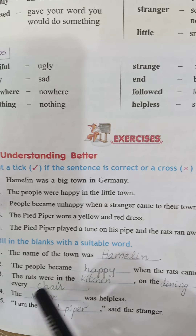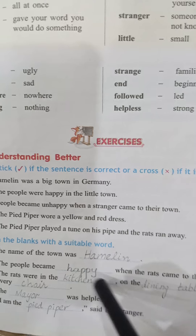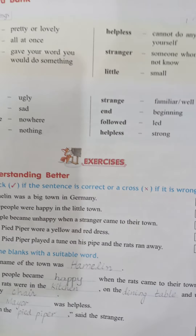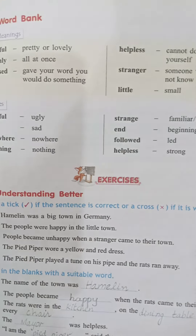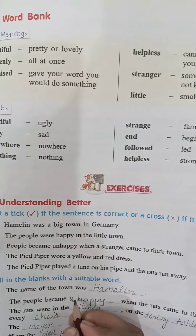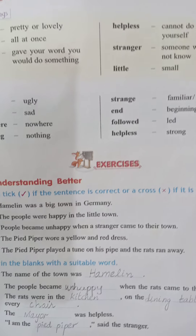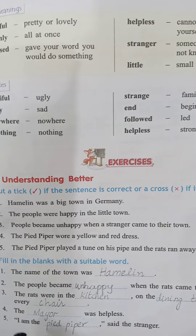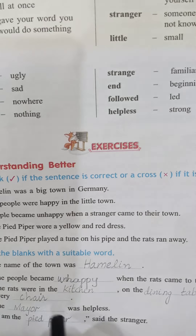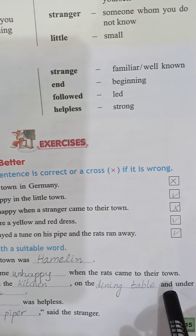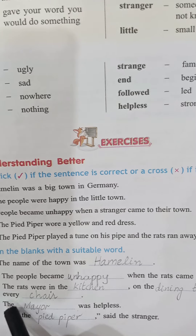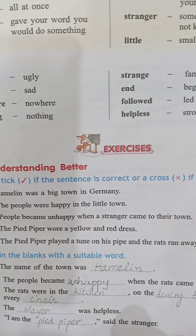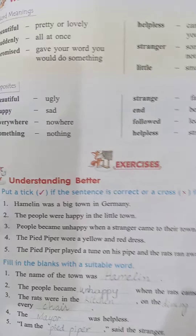Part B: fill in the blanks with a suitable word. The name of the town was Hamelin. The people became unhappy when the rats came to their town. The rats were in the kitchen, on the dining table, and under every chair. The mayor was helpless. 'I am the Pied Piper,' said the stranger.